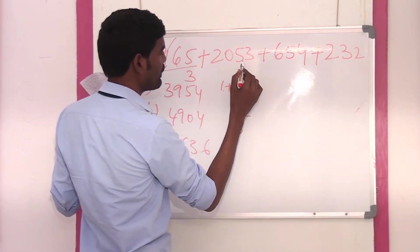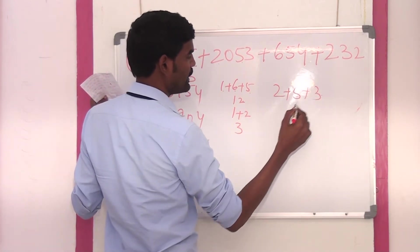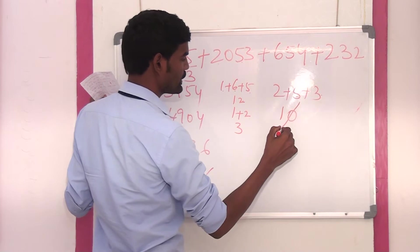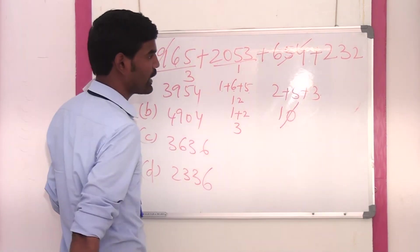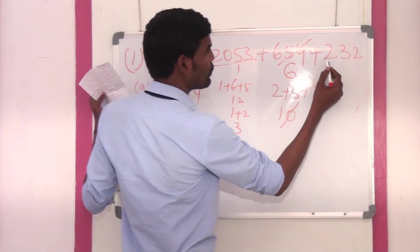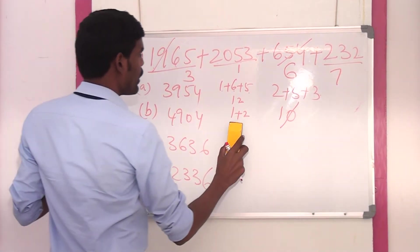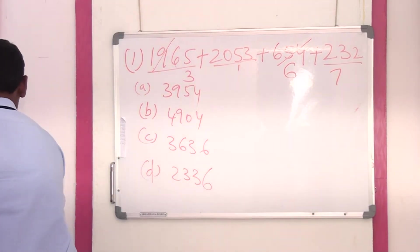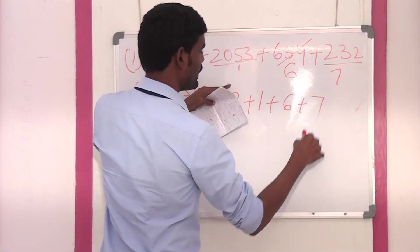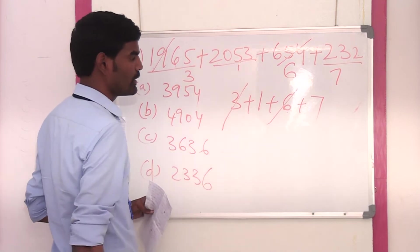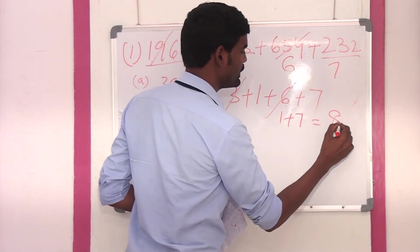The digit sum of 654: 5 plus 4 is 9 — we can cancel it, so the digit sum is 6. And the digit sum of 232: 2 plus 3 plus 2 is 7. So we got digit sums 3, 1, 6, and 7. Now 3 plus 6 is 9 — we can cancel it (9 written as 0). So 1 plus 7: the final digit sum is 8.